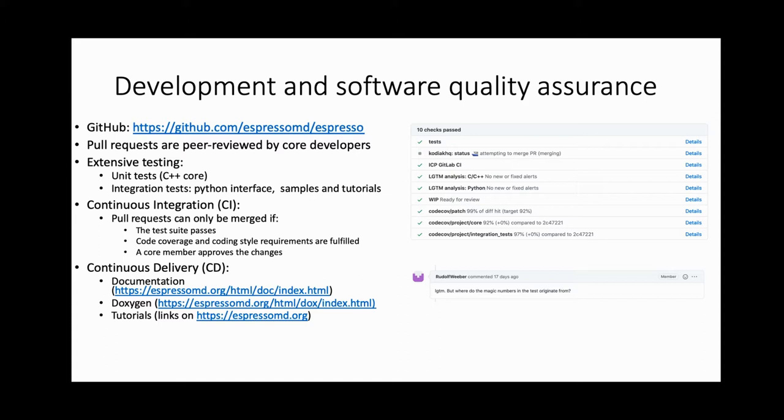In the last years, a lot has changed concerning the development process of ESPResSo. In the beginning, a few PhD students had write access and directly pushed changes to the repository. Nowadays, every change to the code base needs to be approved by a core developer. In addition, we added more and more unit tests for the C++ core and integration tests for the Python interface, the sample scripts and the tutorials. All these checks are automatically run when a pull request is opened on GitHub.